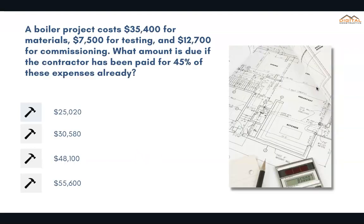A boiler project costs $35,400 for materials, $7,500 for testing, and $12,700 for commissioning. What amount is due if the contractor has been paid 45% of these expenses already? The correct answer is $30,580.